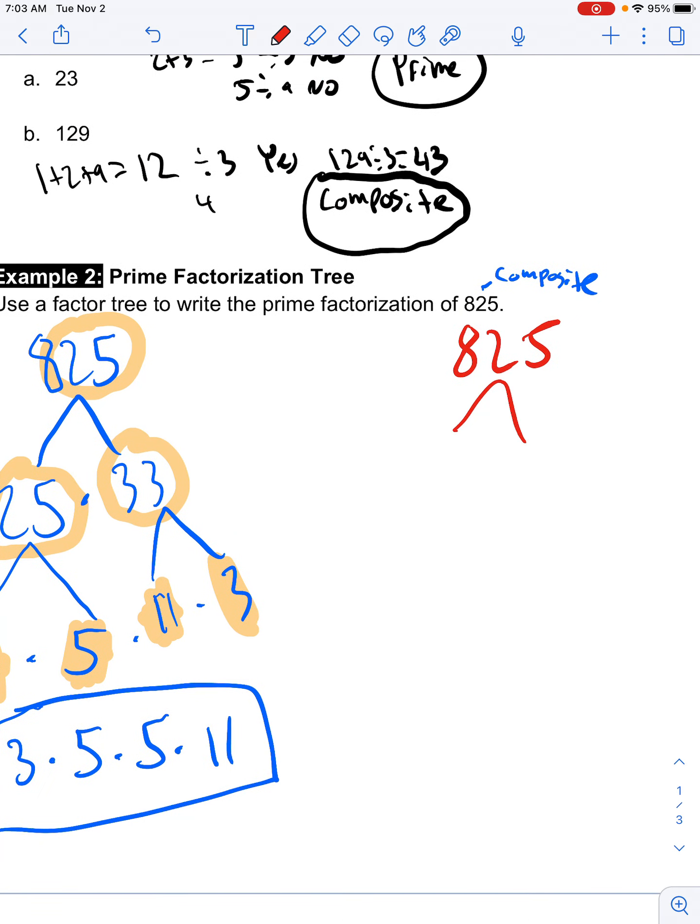Now, maybe you looked at this number and you said, I know it ends in a 5. Therefore, it has to be divisible by 5. Absolutely. Okay. I agree. So, we could say, 5 times 165 is going to equal 825. 5 is a prime number. That's good. But 165 is not. We got to break that down more. Again, I see it ends in a 5. So, I can divide it by 5 again. Now, I'm going to get 5 times 33. 5 is still a prime number. 33 is not. But I can break this down into 11 times 3. And you'll notice I got the exact same answer.